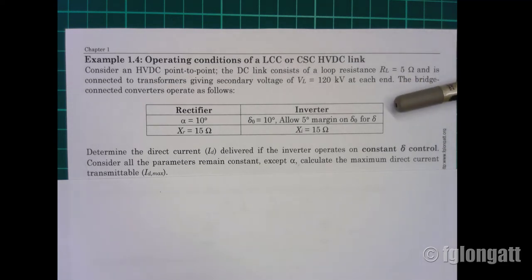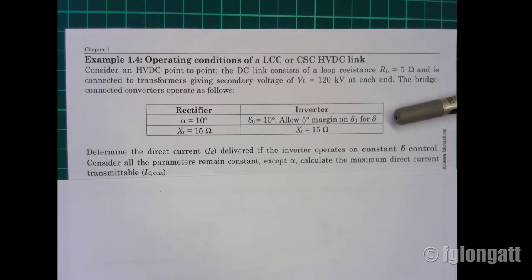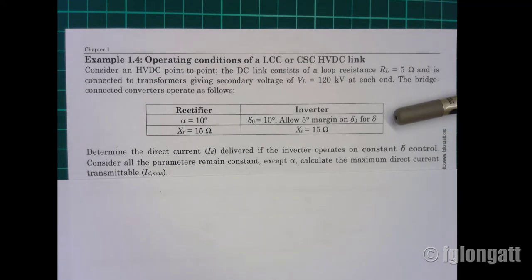One converter is a bridge rectifier with alpha equal to 10 degrees and a reactance of 15 ohms. On the other side, we have a bridge working as an inverter with delta_0 equal to 10 degrees, but we have the possibility of moving that angle using alpha control, with a 5-degree margin to modify delta. The inverter reactance is also 15 ohms.